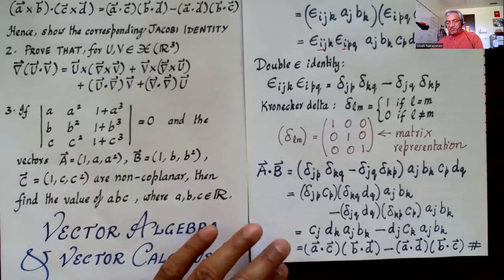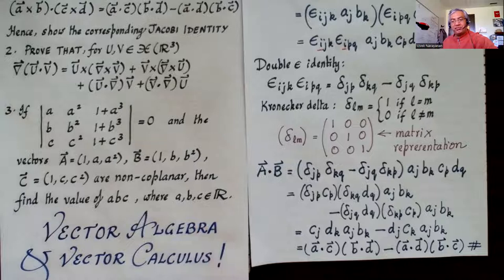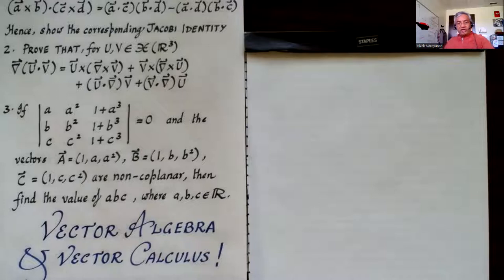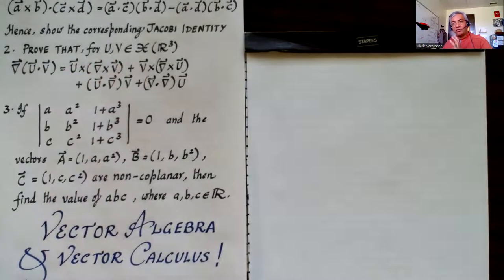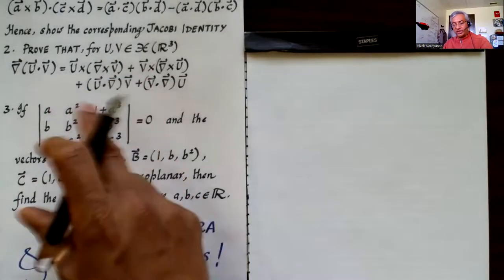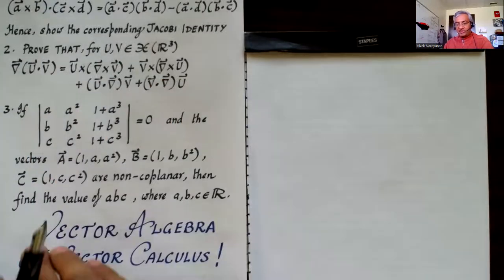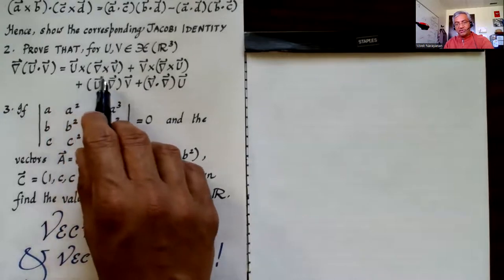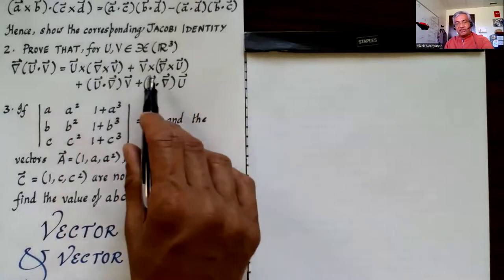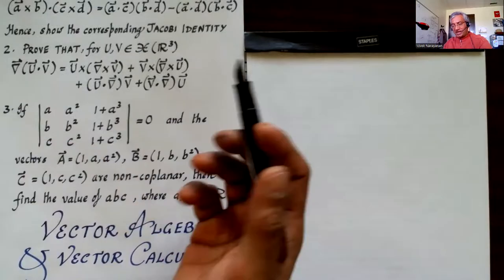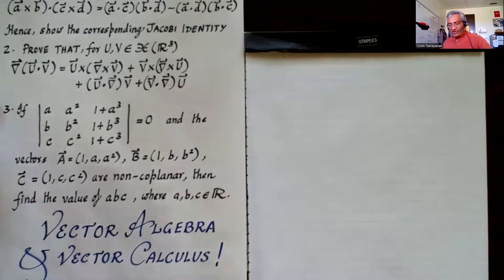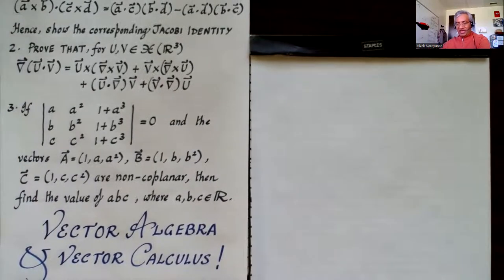The second problem concerns vector calculus. To prove the identity ∇(u·v) = u×(∇×v) + v×(∇×u) + (u·∇)v + (v·∇)u, we should start from the right side rather than the left. Our strategy: compute the i-th component of u×(∇×v), then interchange u and v to get v×(∇×u), and hope that when we add them we recover all terms on the right side — rather than trying to start from the left, which would be much harder.